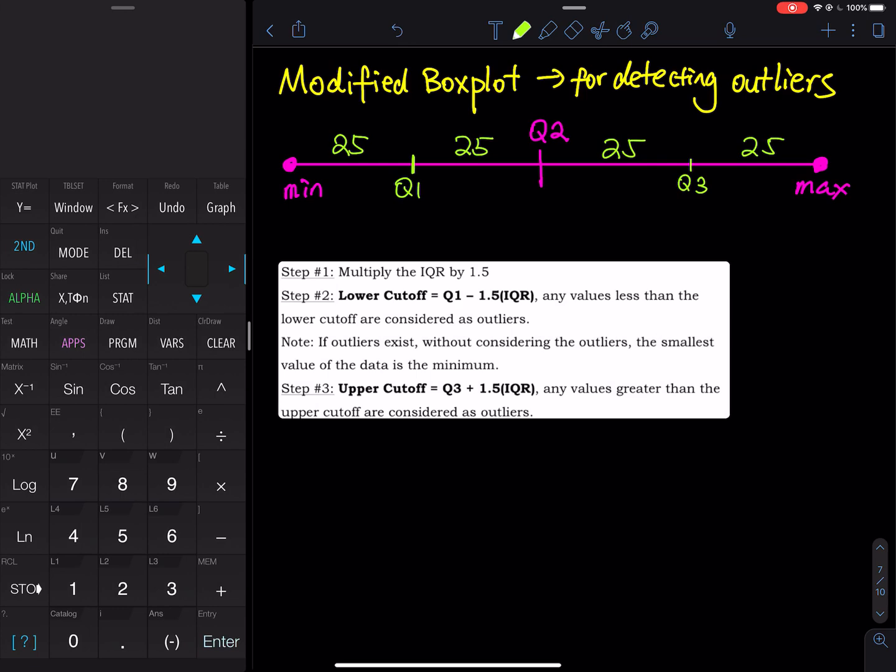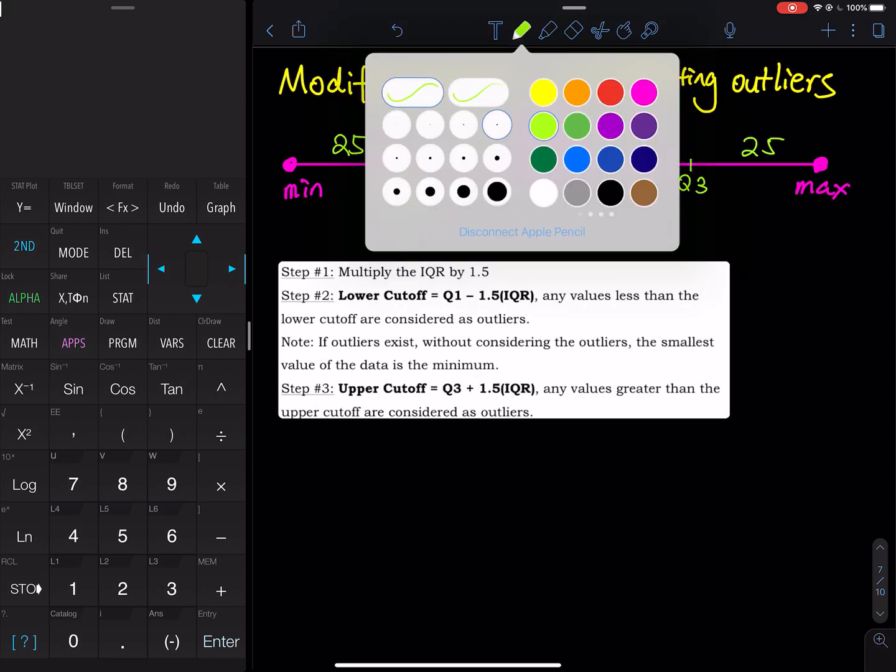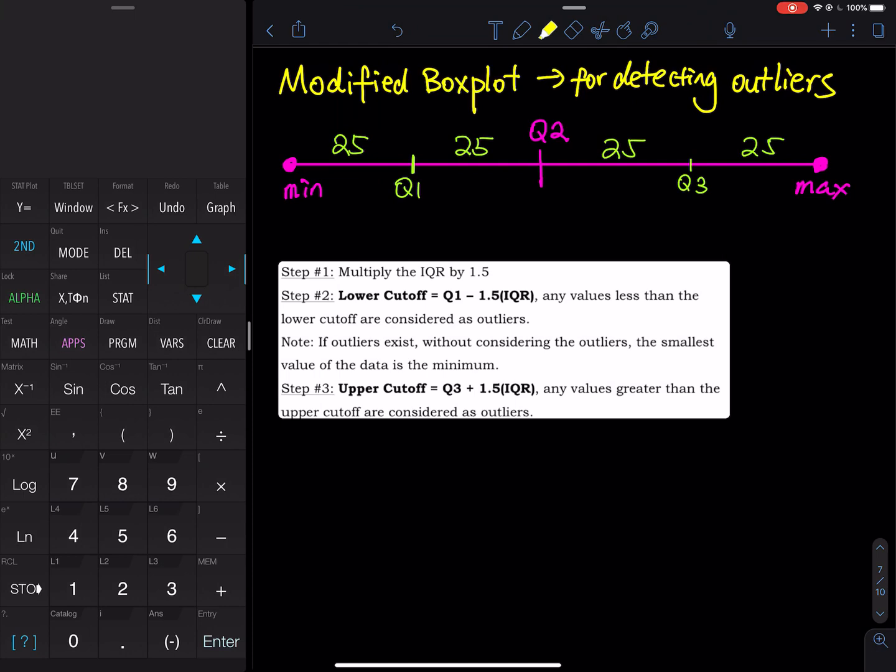So one vocabulary that I would like to introduce is called the interquartile range. So we are going to grab the 50% in the middle, and then we build an interquartile range, just like the box of the boxplot. So 25 plus 25, this piece summed up to 50%. We call that interquartile range.